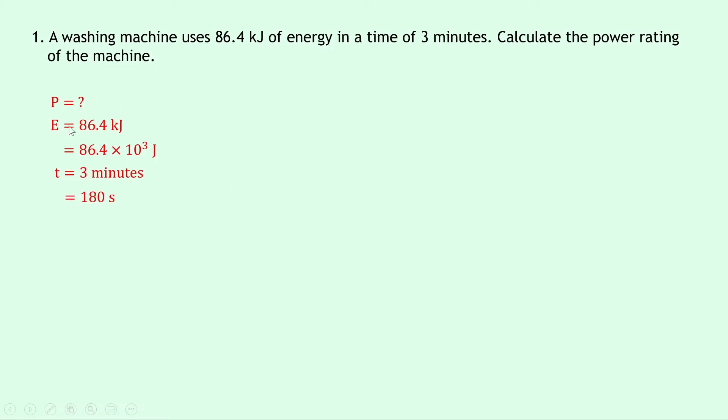So writing down the equation relating power, energy and time, we have p equals e over t, and substituting in the numbers gives us 86.4 times 10 to the 3 divided by 180, and if you put that into your calculator you should get an answer of 480 watts.